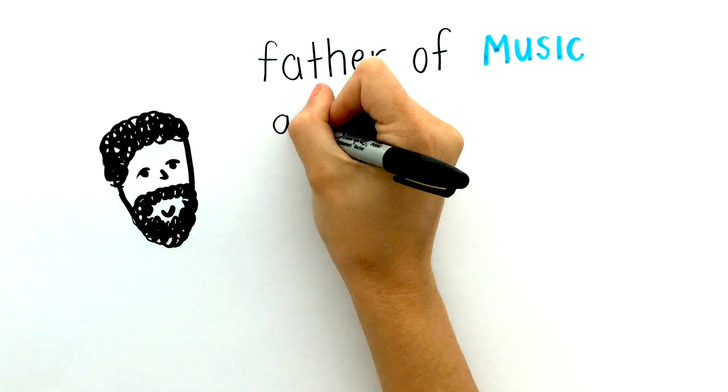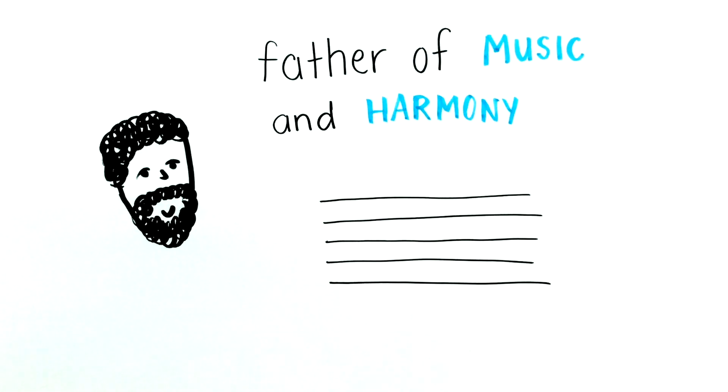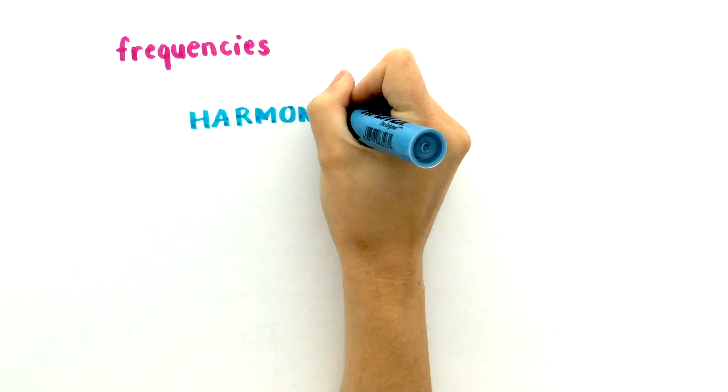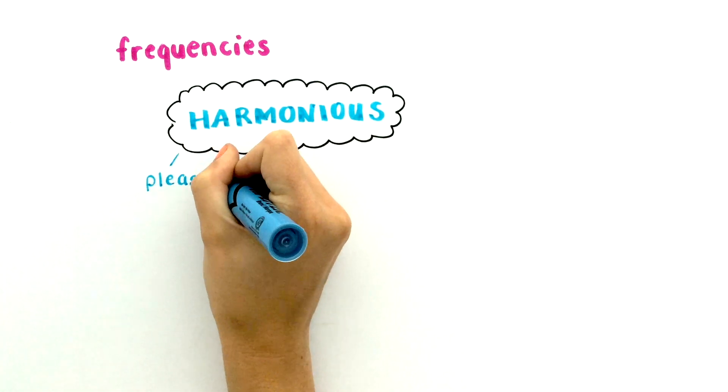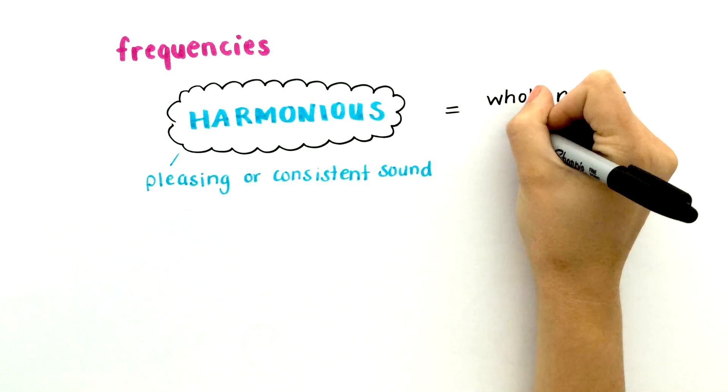Pythagoras was also known as the father of music and harmony. He discovered a relationship between the frequencies of sounds. Harmonious sounds, meaning pleasing or consistent sounds, had frequencies with whole number ratios between them.